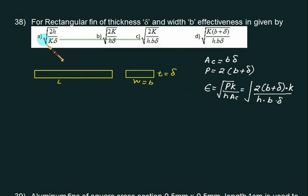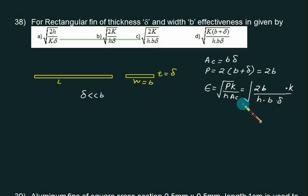We confirm the choice. Choice D is closely marked but two is not present. For this one we know that the fin is normally very thin, and if the fin is very thin we assume that delta is very less as compared to width B. In that case B plus delta will be same as the B value, equal to twice B. If I replace this term by twice B then we get B cancel and we left with under root of 2K by H delta. In that case choice B is correct.